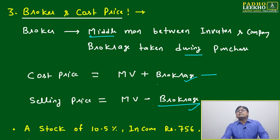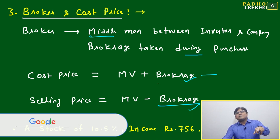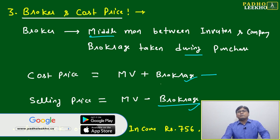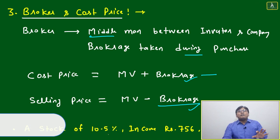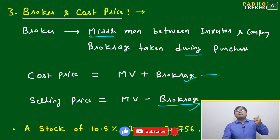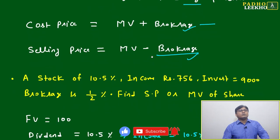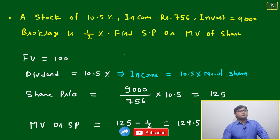Cost price equals market value plus brokerage charges. For example, a 5% stock at ₹96 — your market value is ₹96 plus brokerage charges, maybe one percent or half percent. Generally it will be one to one-and-a-half percent — not more than that. At selling time, if the market value is ₹110, then selling price equals ₹110 minus brokerage of one percent.